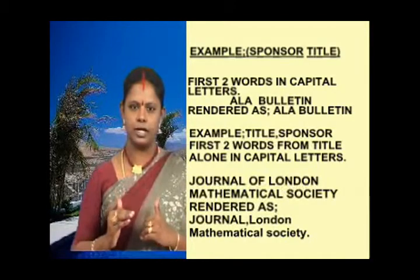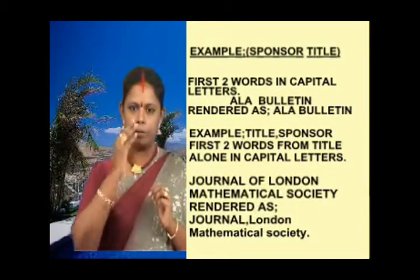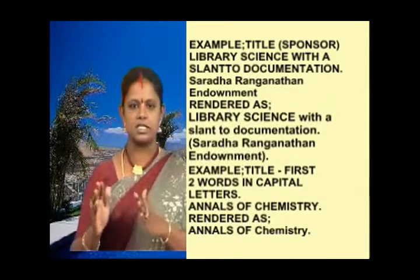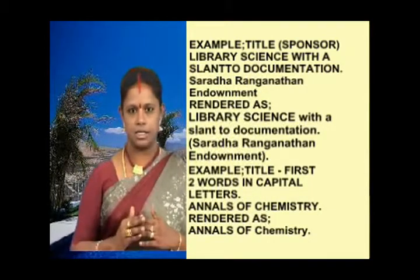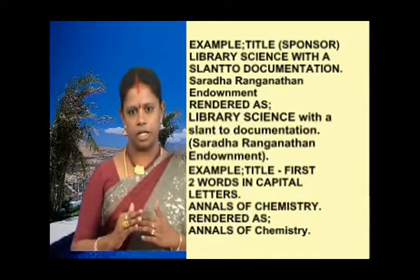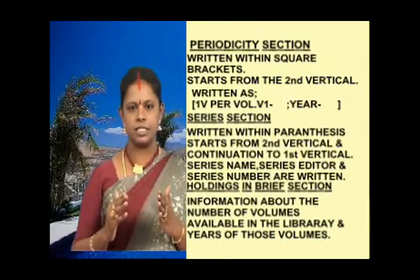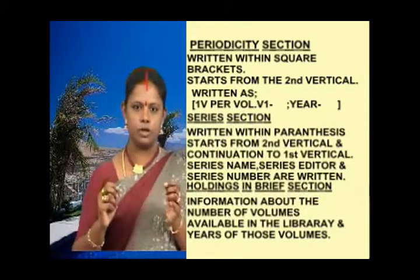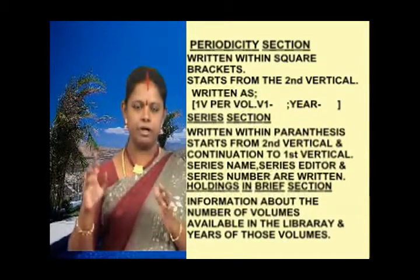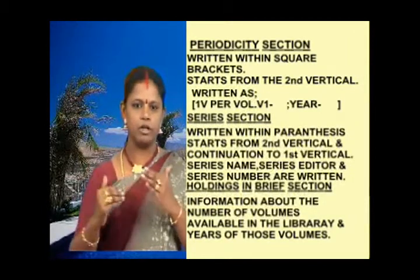In the heading section of periodicals we give only the title. There are four types of heading section: the first is 'sponsor, title'; the second is 'title, comma, sponsor'; the third is 'title within parenthesis sponsor'; and the fourth is 'title alone'. The first type begins with the sponsor name and ends with the title; the second begins with the title followed by a comma and the sponsor; the third has the sponsor's name within parenthesis; and the fourth gives only the title. The first two words from the title are written in capital letters and the rest in normal letters.